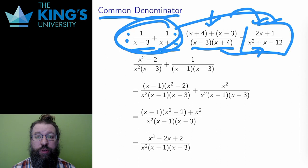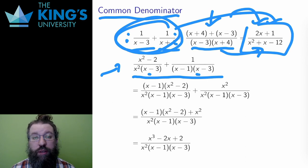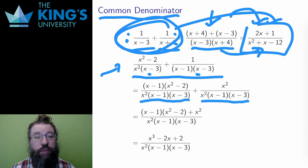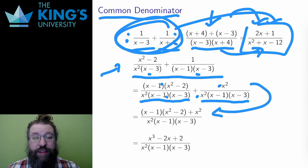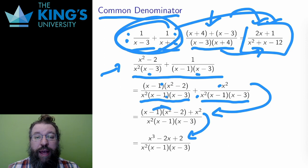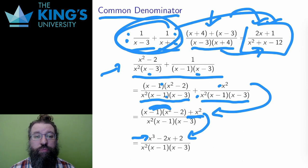Here is another more complicated example. The denominators of these two rational functions do have something in common, x minus 3. So the common denominator doesn't need to repeat the x minus 3; it will be x squared times x minus 3 times x minus 1. I need to multiply the first fraction by x minus 1 and the second by x squared, multiplying the top and bottom of course. Then both fractions have the same denominator, and I can combine them by adding numerators. Multiplying out the binomials gives a numerator of x cubed minus 2x plus 2, leaving the denominator in factored form.